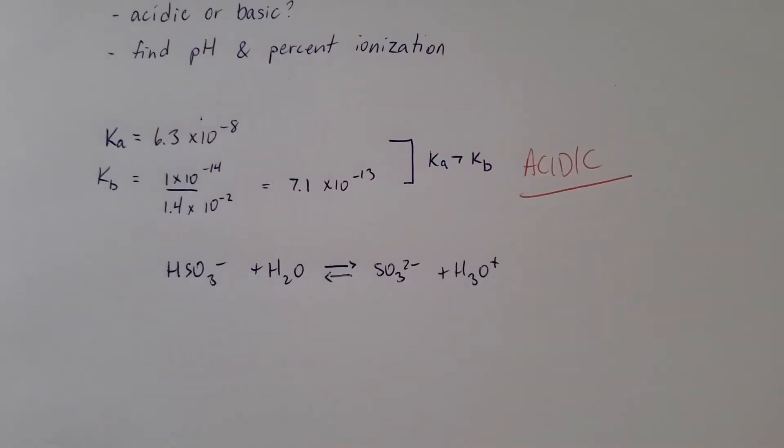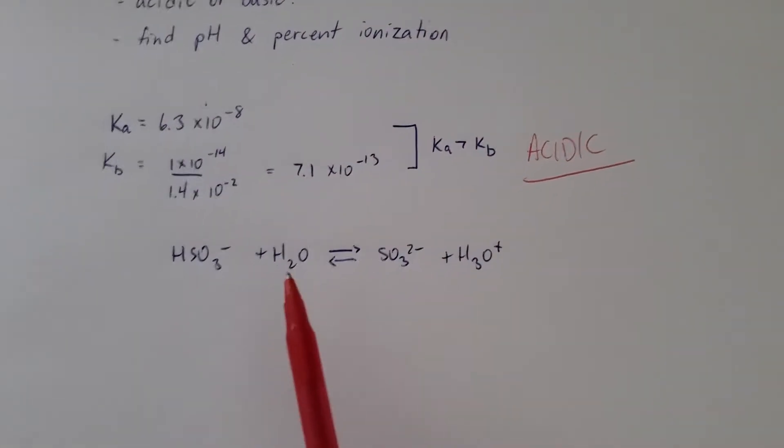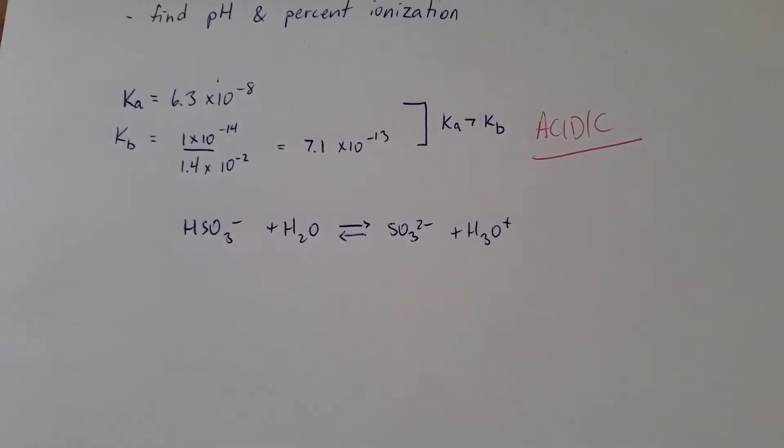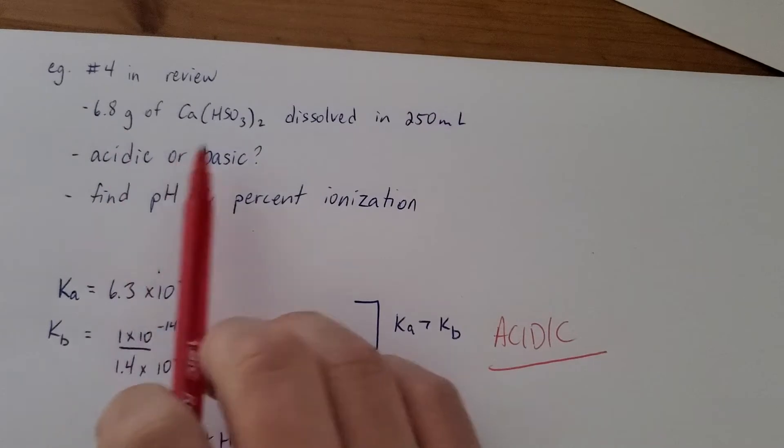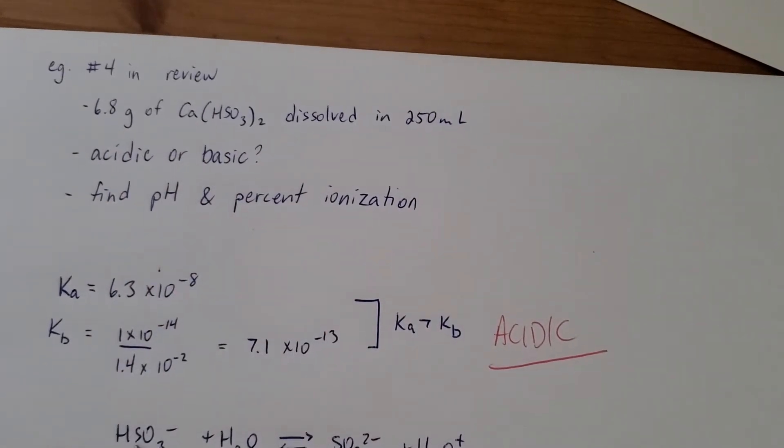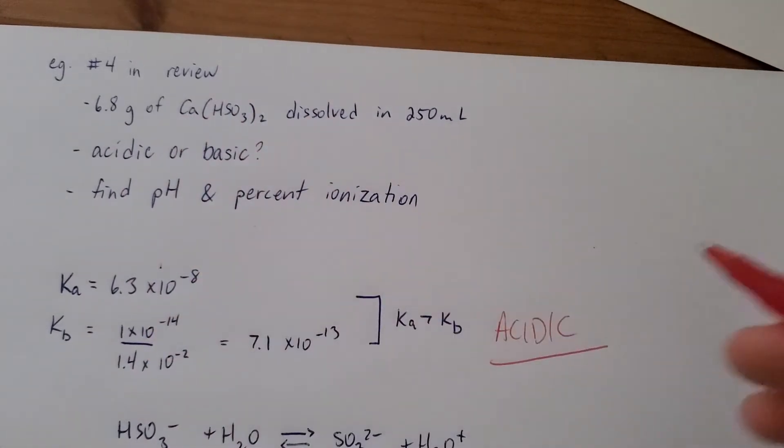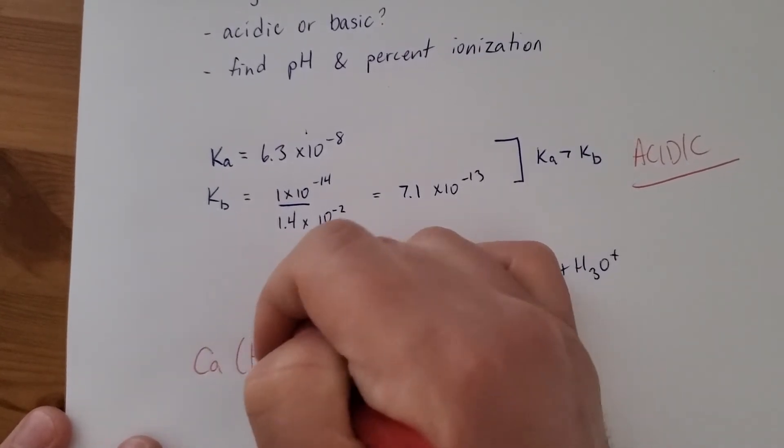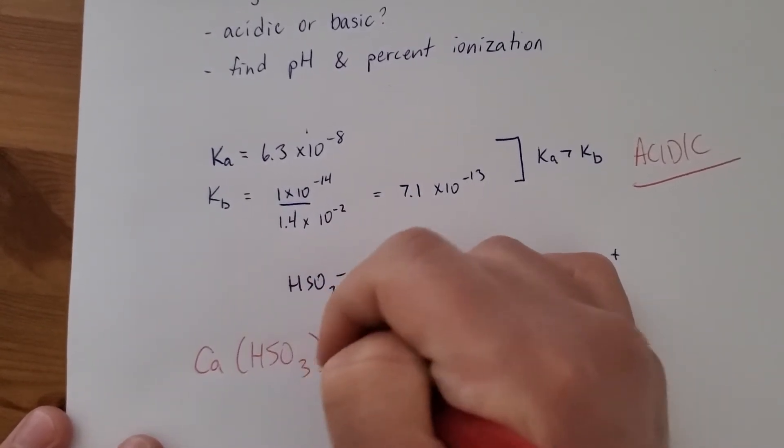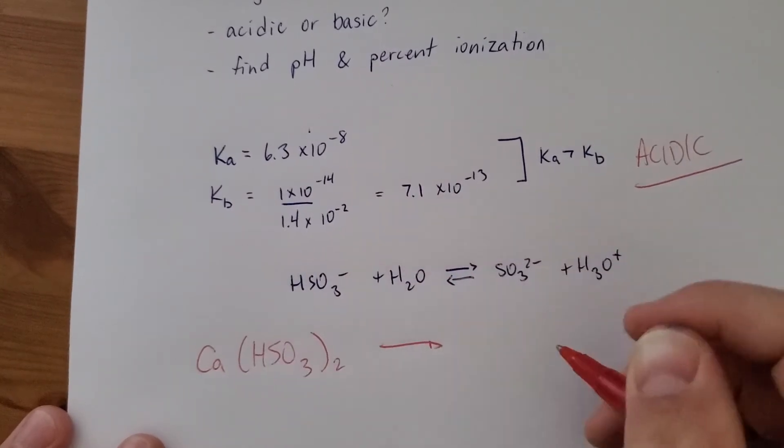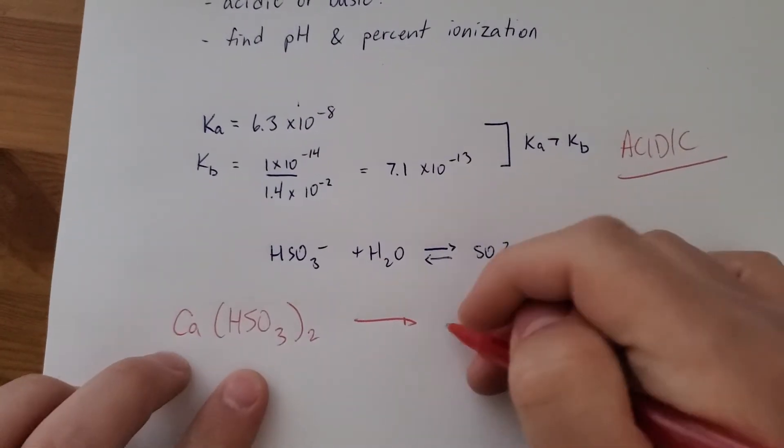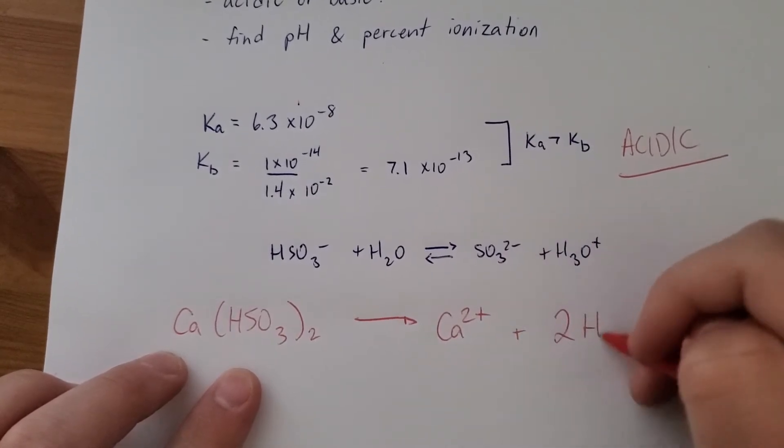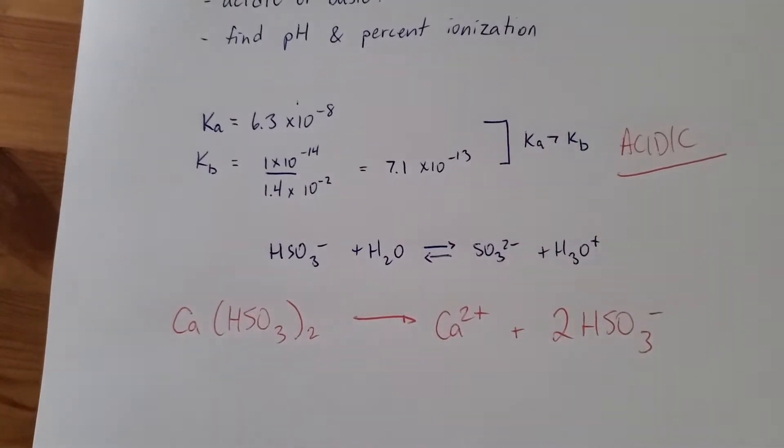To do that, we're going to have to find the hydronium concentration. This is the ionization. We need this. We're going to need to find the concentration of HSO3-. We'll get it from here, but we have to be aware of the dissociation not being one-to-one. So when this breaks apart in water, we get calcium ions and two hydrogen sulfite ions.